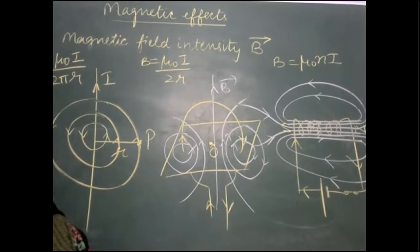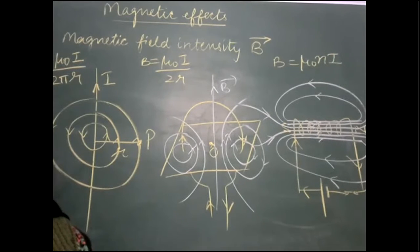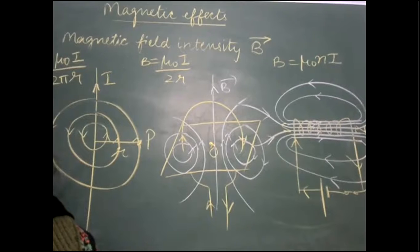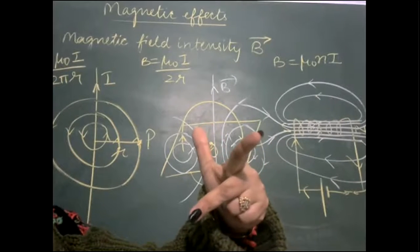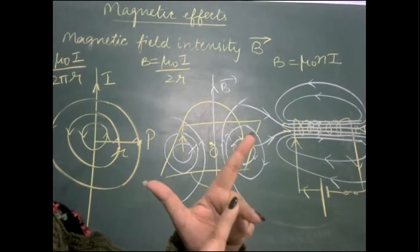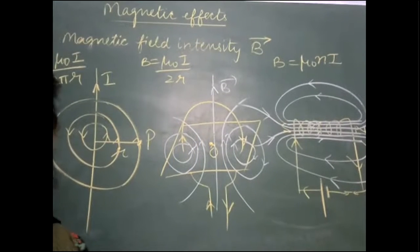The direction of magnetic Lorentz force is given by Fleming's Left-Hand Rule. Stretch the first three fingers of your left hand so that they are mutually perpendicular. If the forefinger gives the direction of the magnetic field and the middle finger gives the direction of current, then the thumb gives the direction of the magnetic Lorentz force.